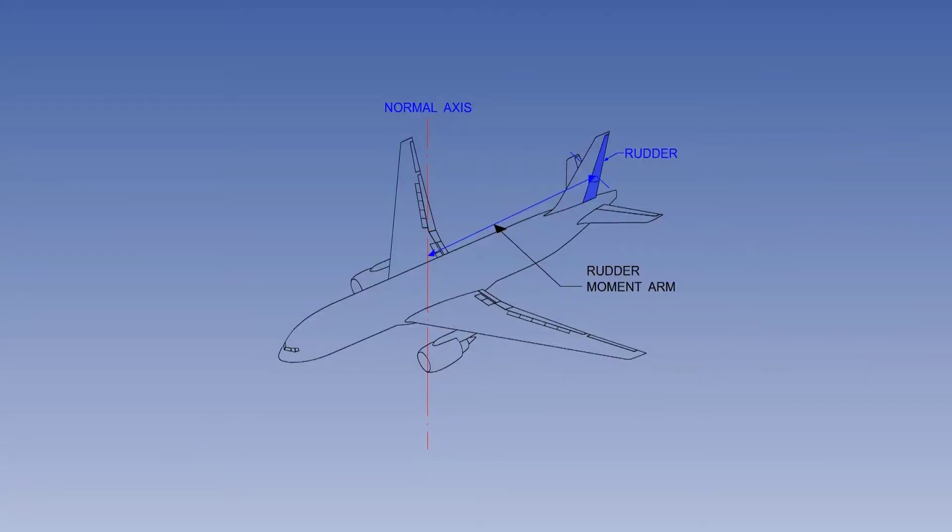The rudder gives directional control about the normal axis. The rudder is not used to steer the aircraft like a boat. The main use of the rudder is to balance the aircraft, to maintain coordinated flight, but in addition the rudder is used to fulfill several other particular functions.